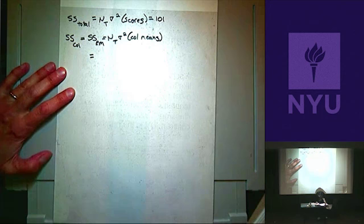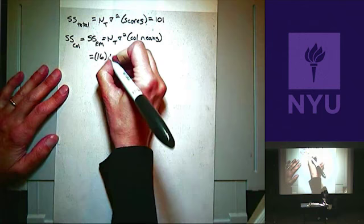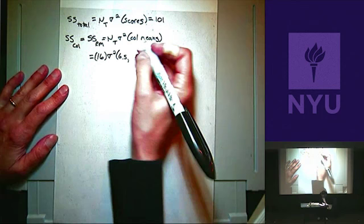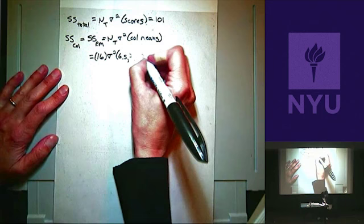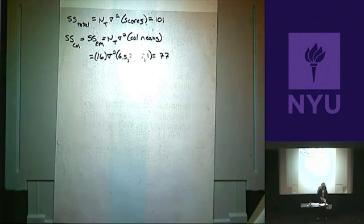Our NT is going to be 16 — 16 times the variance of the four column means, which I'm going to put in. That's our sum of squares for the column.